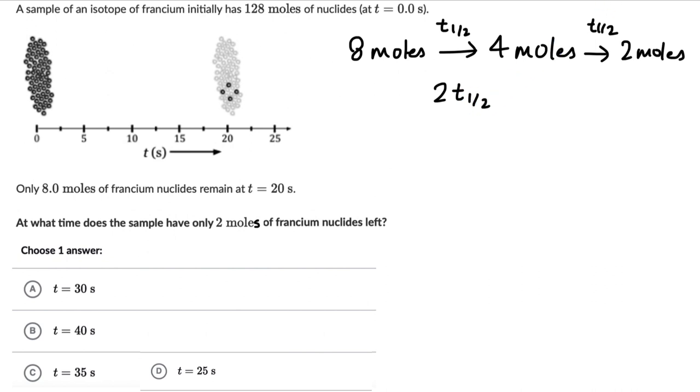This is the value that we need to figure out. Once we do figure out this, then we can add 20 to it to find the total time that it takes when the sample has only 2 moles left. So our aim is to figure out the half life. But from this much data we might not be able to figure out what half life is.